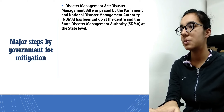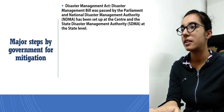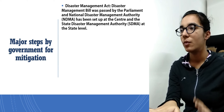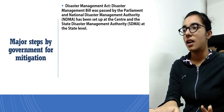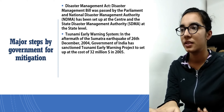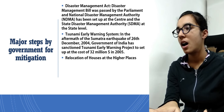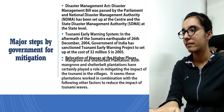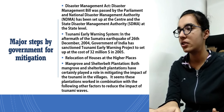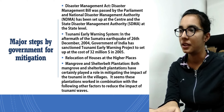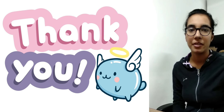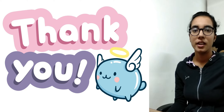The major steps by the government for mitigation include the Disaster Management Act, under which the National Disaster Management Authority (NDMA) was set up at the central level and the State Disaster Management Authority (SDMA) was set up at the state level. After the destructive tsunami in 2004, a tsunami early warning system was set up in India. Houses near the sea were relocated, and mangrove and shelter belt plantations were established to reduce the impact of tsunami. Thank you everyone for watching — I hope this lecture is helpful for you.